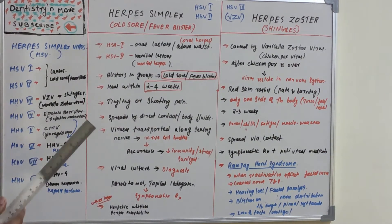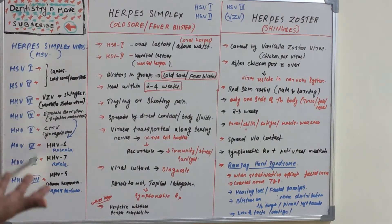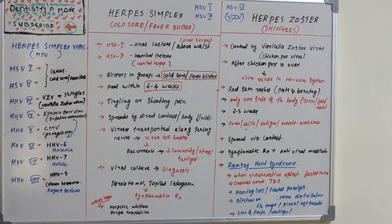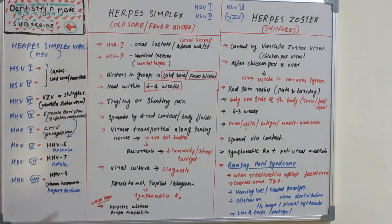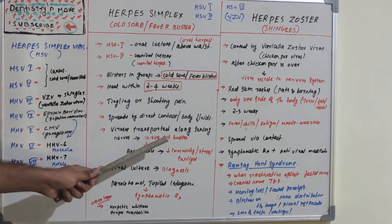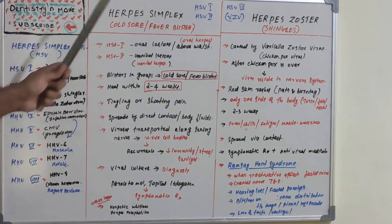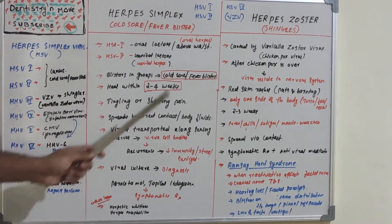That is all about herpes simplex. HSV1 and HSV2 cause blisters, either oral lesions (above waist) or genital lesions (below waist), also known as cold sores or fever blisters. The virus will not be eliminated from the body; it resides in nerve cell bodies and may recur due to low immunity, stress, or sunlight. Now let's move on to herpes zoster.